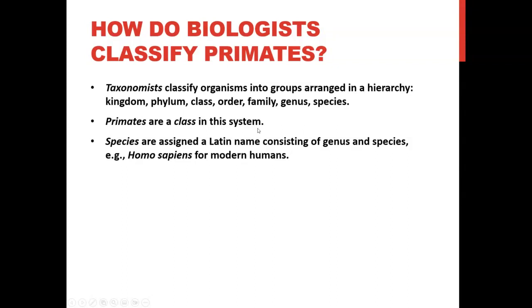Primates are an order in the system. Species are assigned a Latin name consisting of genus and species, such as Homo sapiens for modern humans. Kingdom is the biggest category and species is the most specific. Primates as an order — which is toward the broader side — includes humans, chimpanzees, orangutans, gorillas, apes, and so on. It's a pretty big grouping.